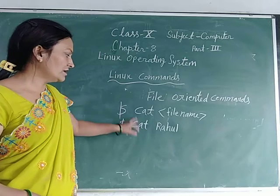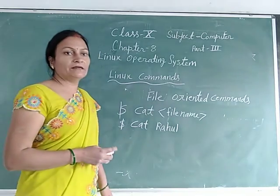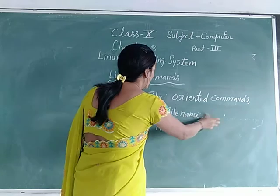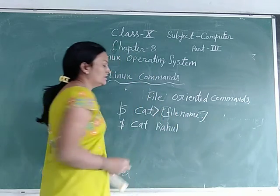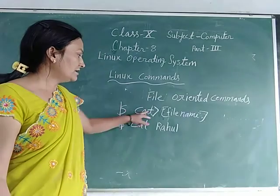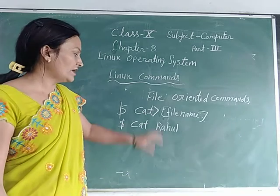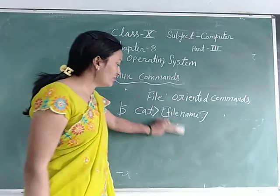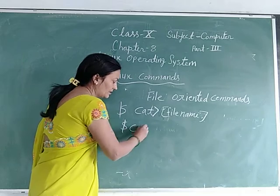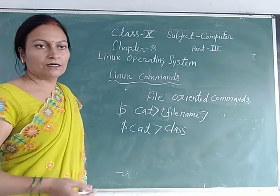You can see the content stored in the rahul file. But using cat with the greater-than symbol (>), you can create a new file. The syntax is: cat > [file name]. For example, if I want to create a new file with the name 'class', I write: cat > class. A class file is created on the computer.